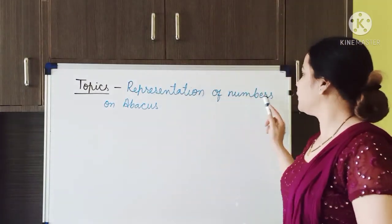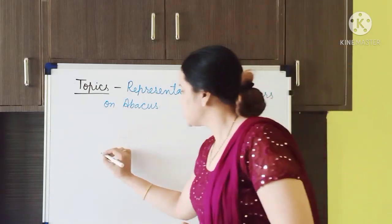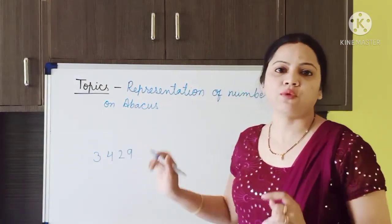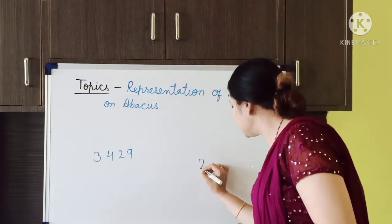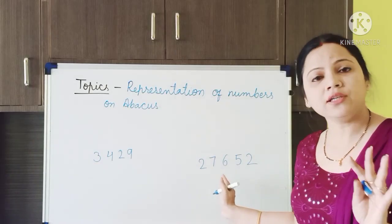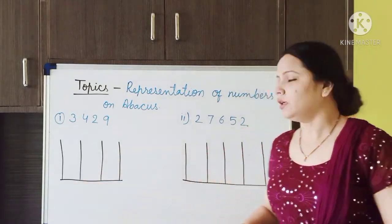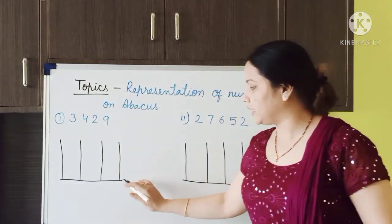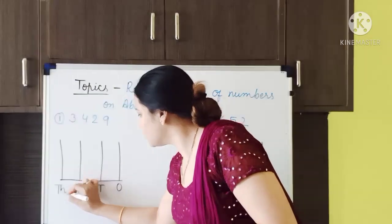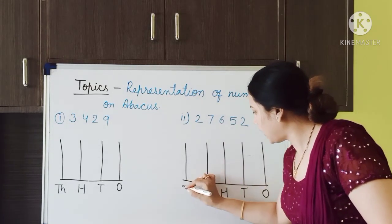Our second topic is representation of numbers on abacus. I am going to take two numbers — one 4 digit number and one 5 digit number. I have taken 3429 as the 4 digit number and 27652 as the 5 digit number. I have made two abacus diagrams: one with 4 spikes for the 4 digit number and one with 5 spikes for the 5 digit number. The place values are labelled 1s, 10s, 100s, and 1000 on each.